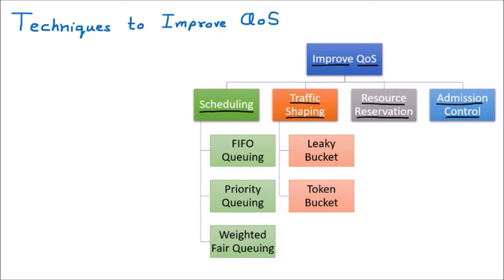Each area has its own specification. Scheduling involves different types like FIFO queuing, priority queuing, and weighted fair queuing. Traffic shaping handles bulky traffic coming to the network using algorithms like leaky bucket or token bucket. Resource reservation means whatever resources are required — like a buffer — should be reserved in advance. Admission control means controlling whoever's data is coming to our network.